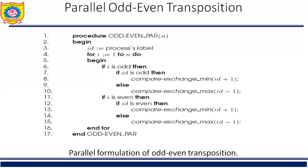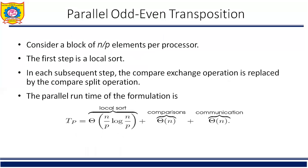A total of N phases are performed. Thus the parallel runtime of this formulation is O(N). Since the sequential complexity of the base sorting algorithm for N elements is O(N log N), this formulation of odd-even transposition is not cost optimal, because its process-time product is O(N²).